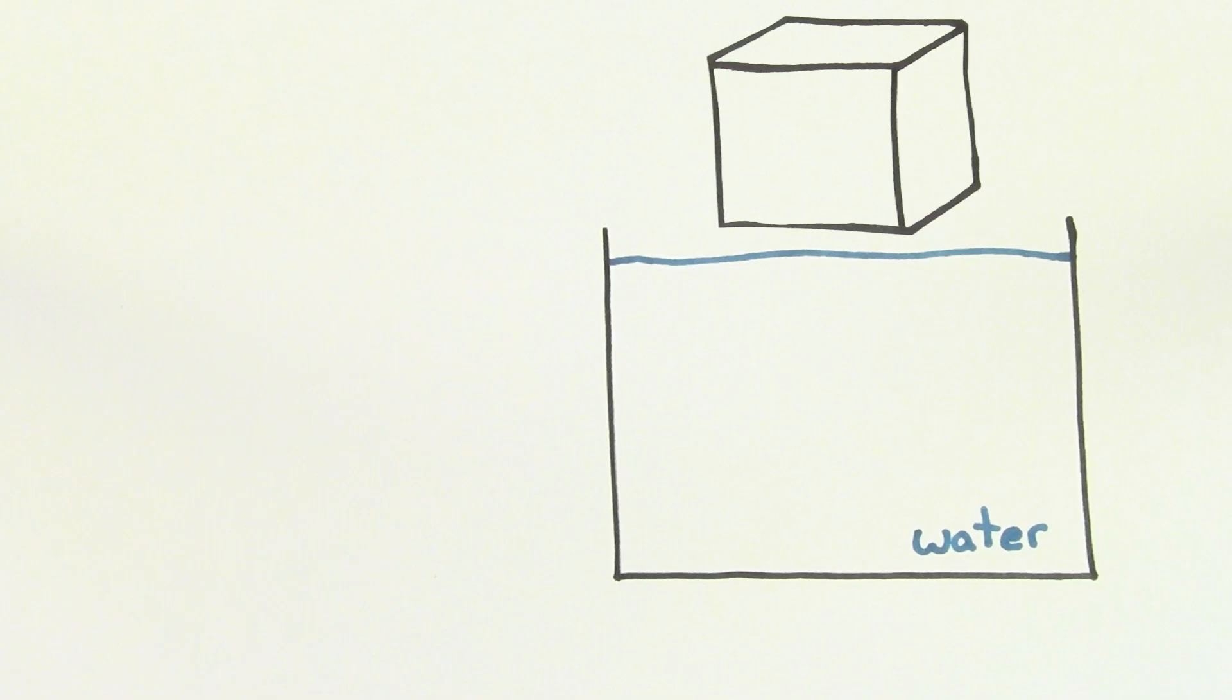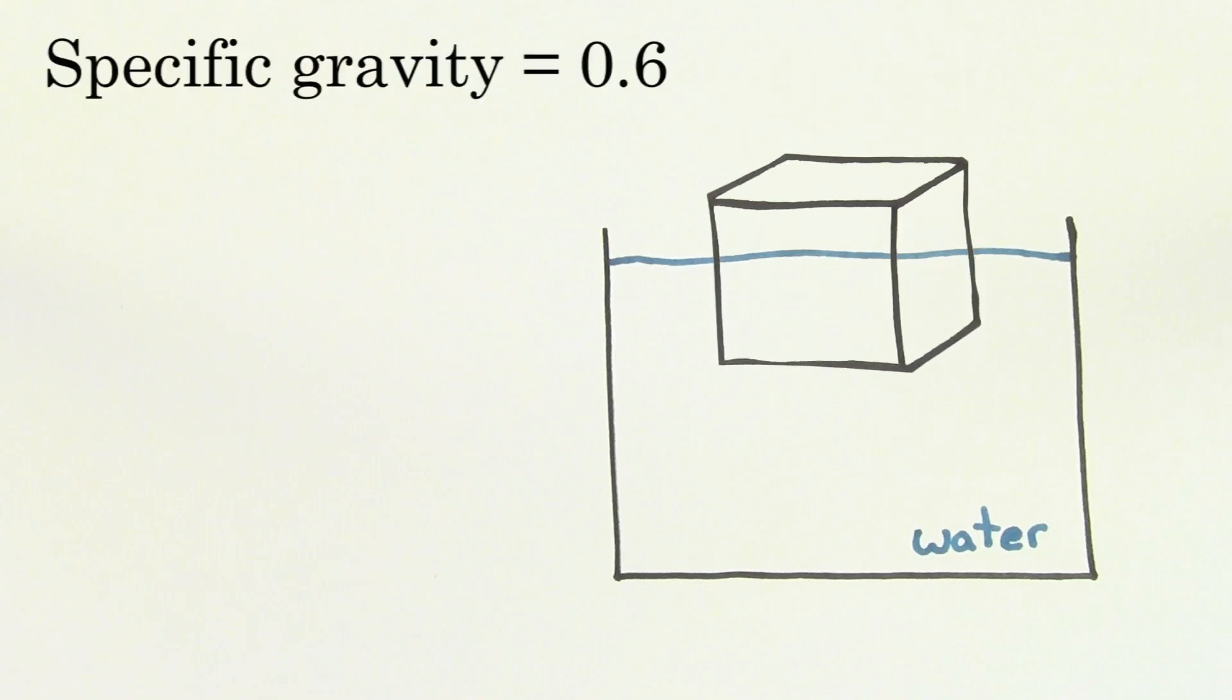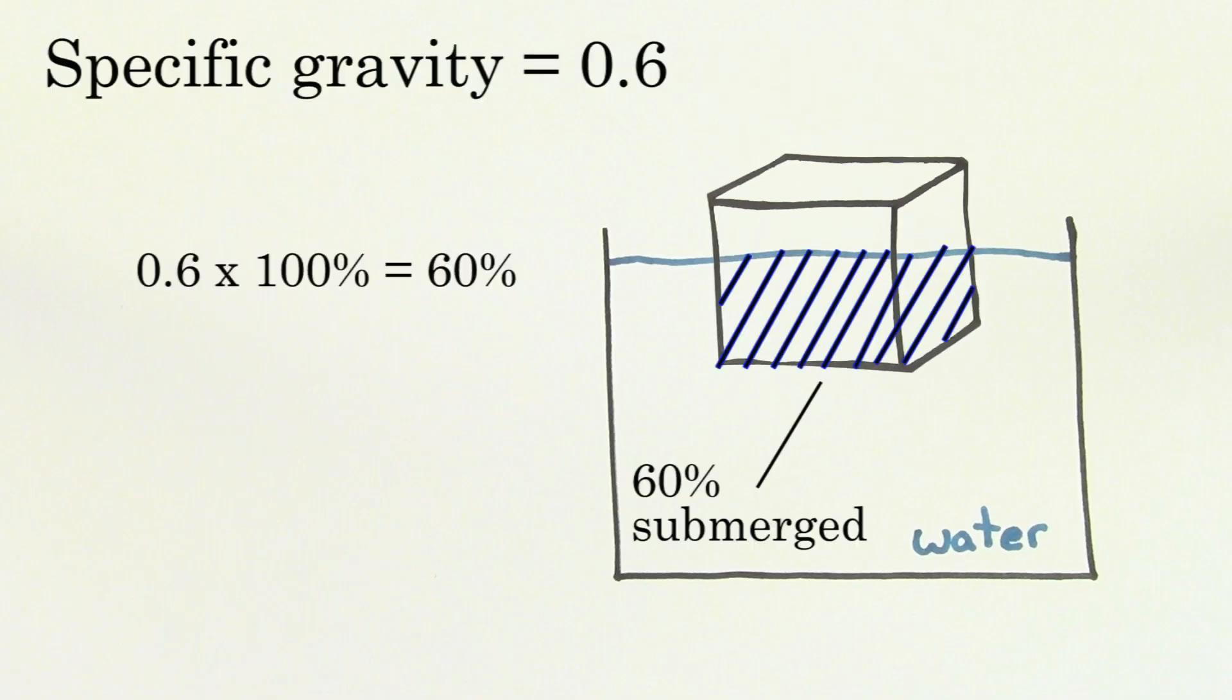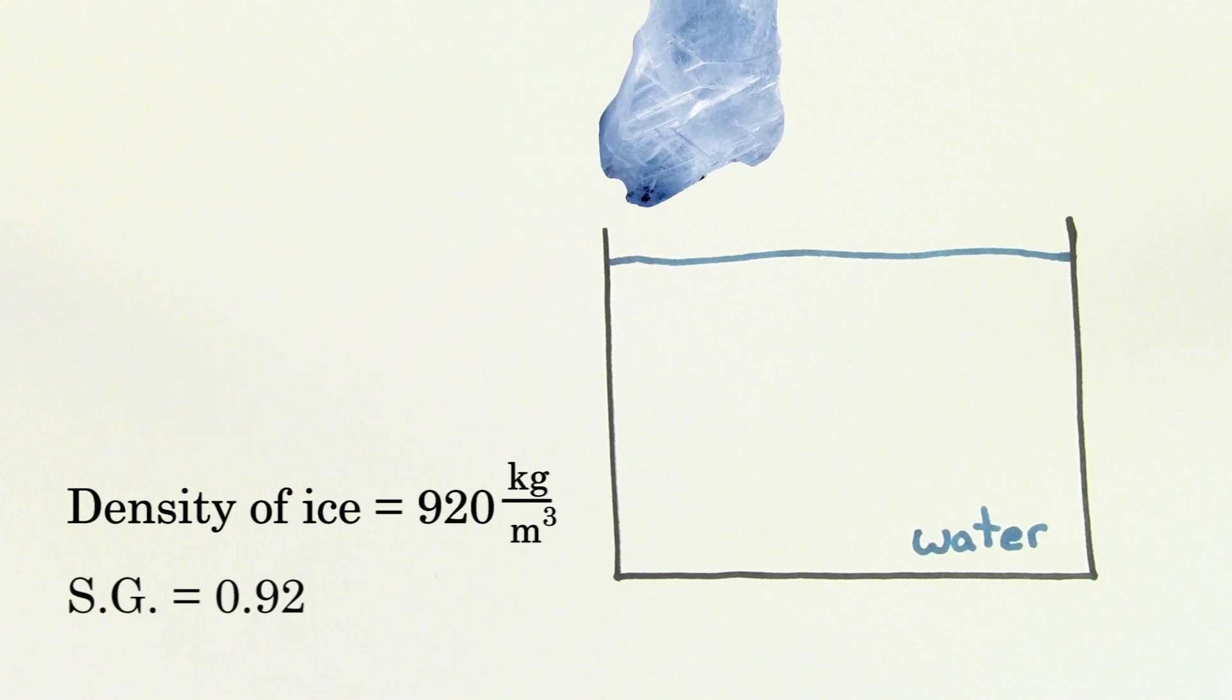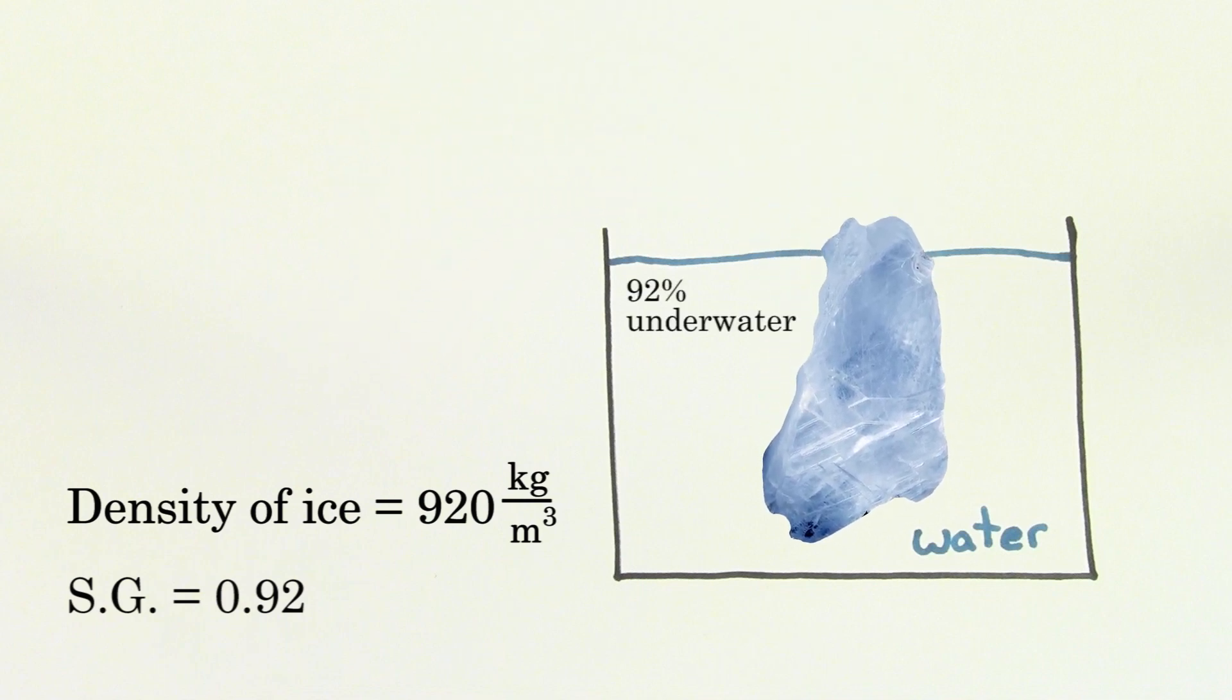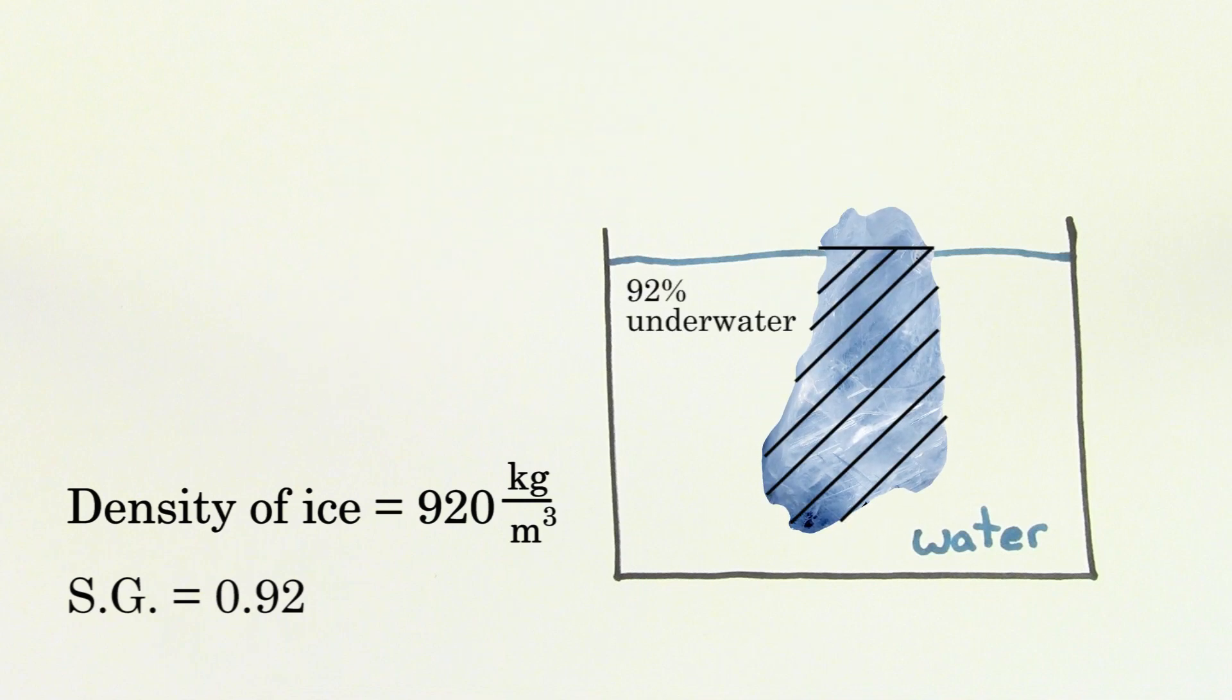If the cube of wood had a specific gravity of 0.6, 60% of the wood would be submerged beneath the water's surface. Ice has a density of about 920 kilograms per meter cubed. That means ice has a specific gravity of 0.92, and that's why 92% of an iceberg's volume is actually underneath the water.